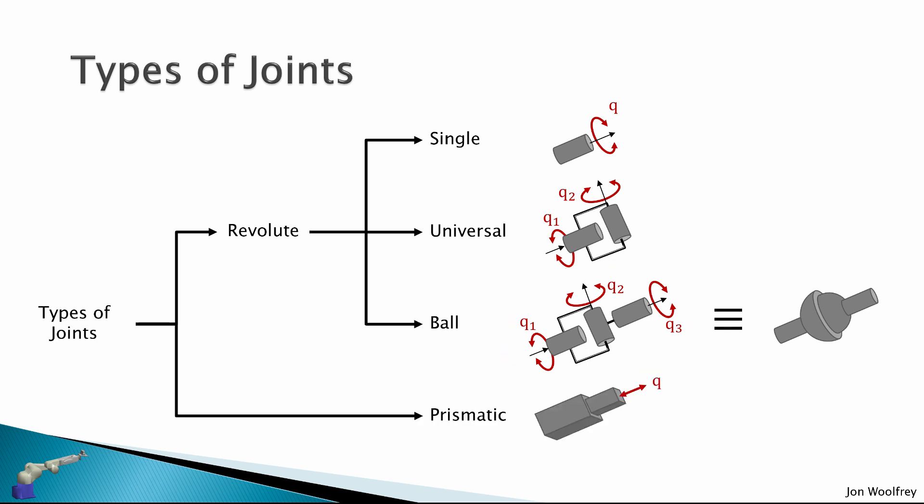And lastly, we have prismatic joints. So these translate along this axis of actuation here. So when we develop a robotic kinematic structure, we have different combinations of these types of joints in sequence.